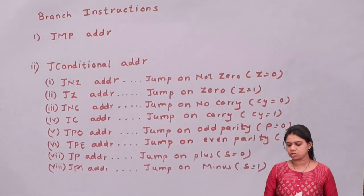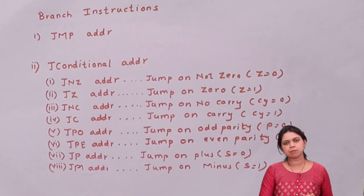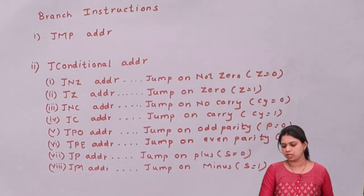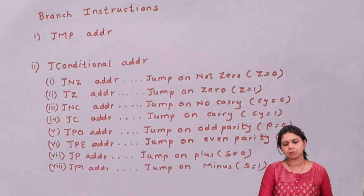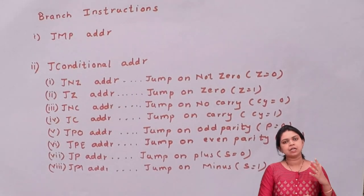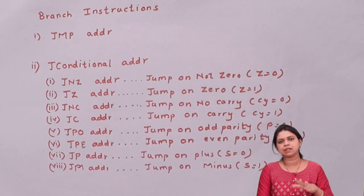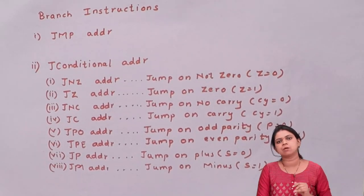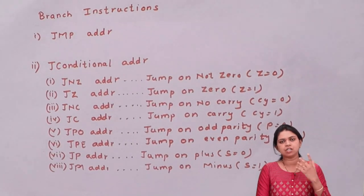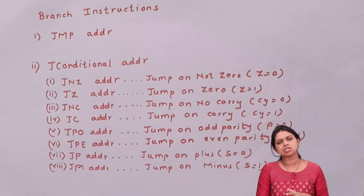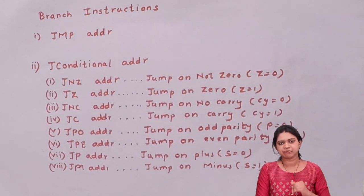The first instruction is JMP address. JMP address means you have to jump onto some address unconditionally. There are two types: number one is unconditional jump and number two is conditional jump. In the unconditional jump, while jumping we don't look at any condition — we just unconditionally jump onto some address. But in the case of a conditional jump, we check the condition, and if the condition is satisfied, then only we jump onto some address.